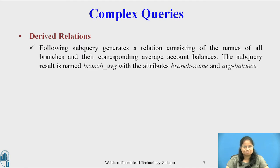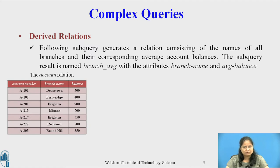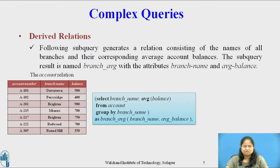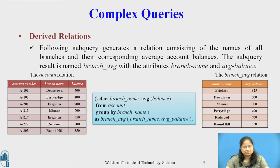Consider the example. Consider the subquery which generates a relation consisting of the name of all branches and their corresponding average account balance. The input to this subquery is the relation account, which consists of the attributes account number, branch name, and balance. The query is: SELECT branch_name, AVG(balance) FROM account GROUP BY branch_name AS branch_average(branch_name, average_balance).